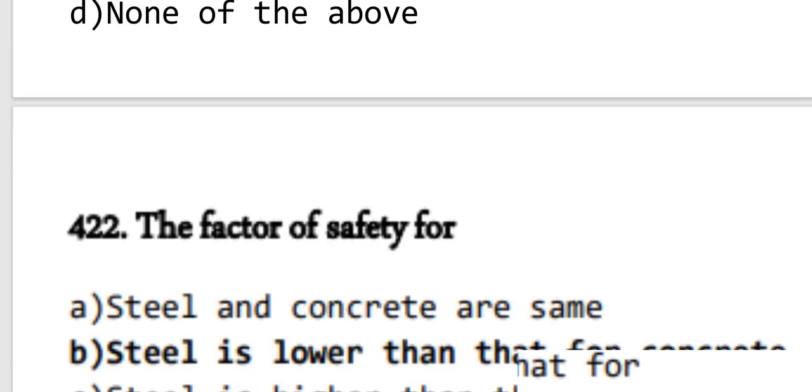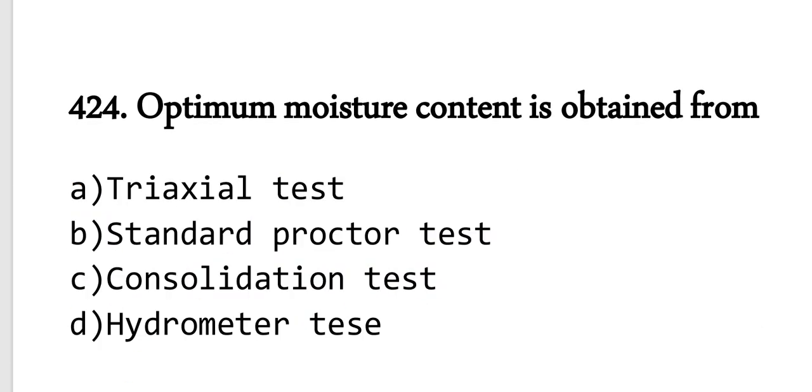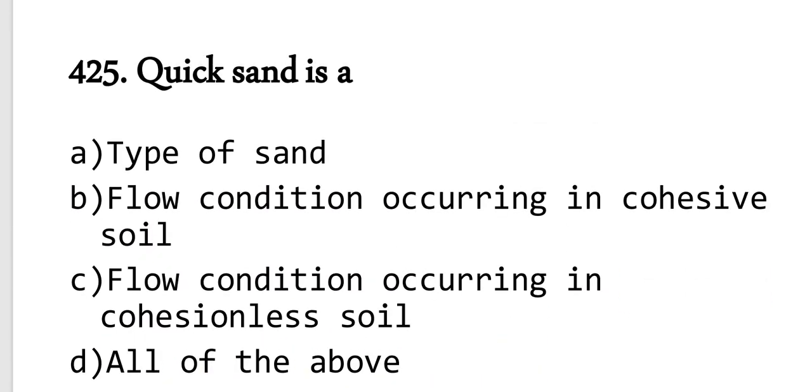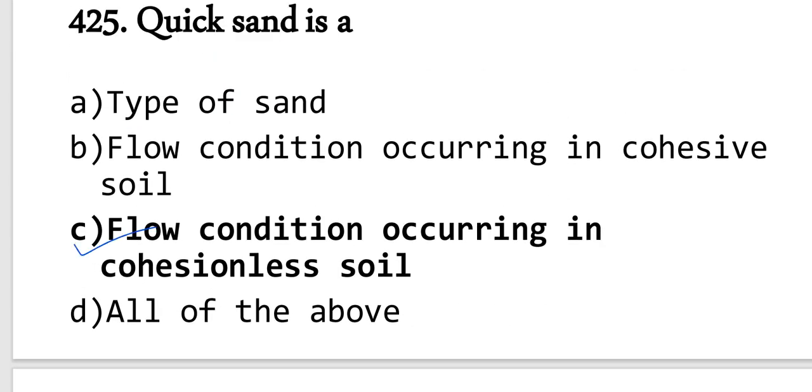Question 423: The relationship between void ratio e and porosity n is n equals e divided by 1 plus e. Option B is correct. This equation is repeatedly asked in PWD and irrigation exams. Question 424: Optimum moisture content OMC. Standard Proctor test is used for optimum moisture content, while triaxial test is used for shear strength parameters. Question 425: Quicksand is a flow condition occurring in cohesionless soil, not cohesive soil. Option C is correct.